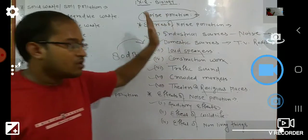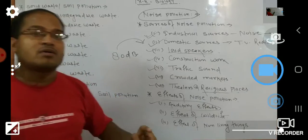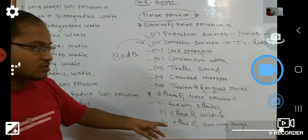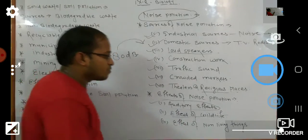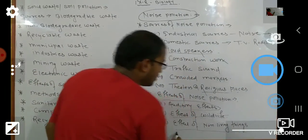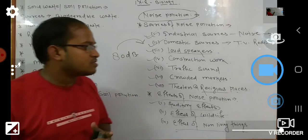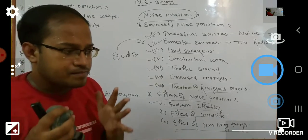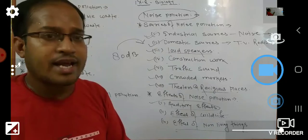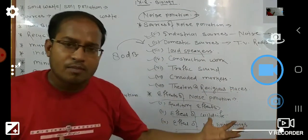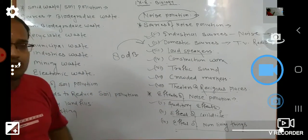Noise pollution also creates vibrations in other areas through loudspeakers and high-intensity equipment. It also affects non-living things — when you use a high loudspeaker and different types of electronic equipment, vibrations are created and our buildings can develop cracks. So that is another harmful effect of noise pollution.